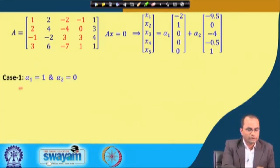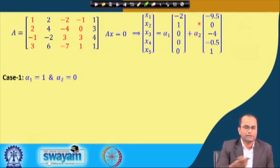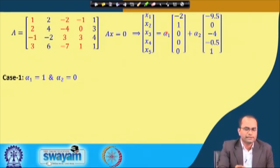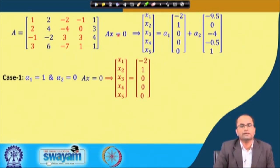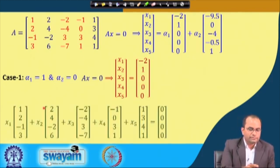In Case 1, if we take α1 = 1 and α2 = 0, that will give one solution of this system. By choosing these alphas we are looking for different solutions. For this particular case, choosing α1 = 1 and α2 = 0, our solution of Ax = 0 becomes (−2, 1, 0, 0, 0). This is the solution of our Ax = 0 system.